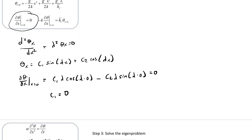So then we're left with this. Theta X is equal to C2 cosine of lambda X.